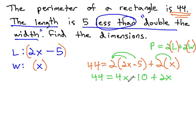After distributing, we always check to combine like terms on each side of the equation. 44 equals 6x minus 10.